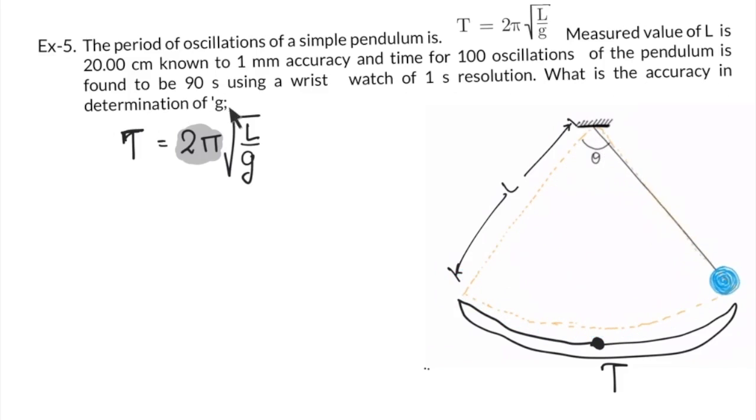What is the accuracy in determination of G? So we need to determine G. Make G as the subject. How will you make G as the subject? Take square on both sides of this equation.